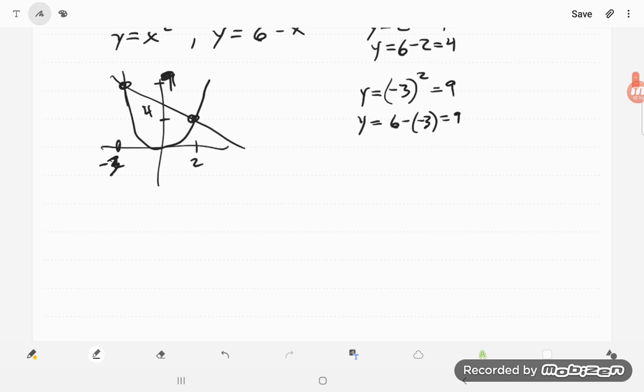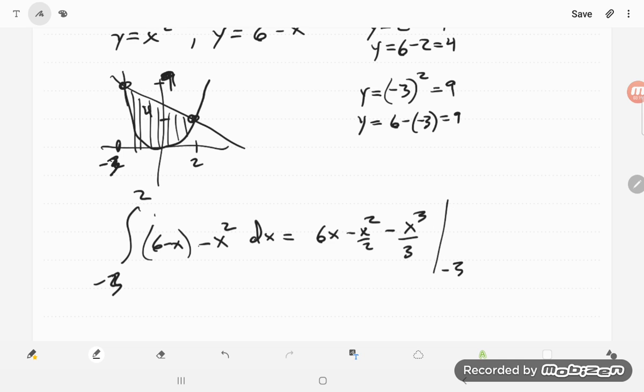Okay, so we want to find that area. In this case, if I use x, I'm slicing this way, and so I need the heights at each of my x values. I'm going to do an integral from negative 3 to 2, and my height is just the top curve, so 6 minus x minus the bottom curve, x squared, and then dx. And so this, I can simply use power rules.